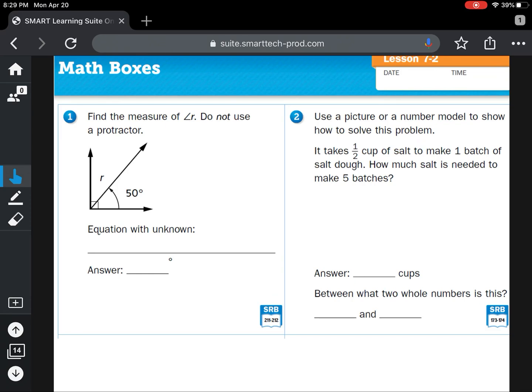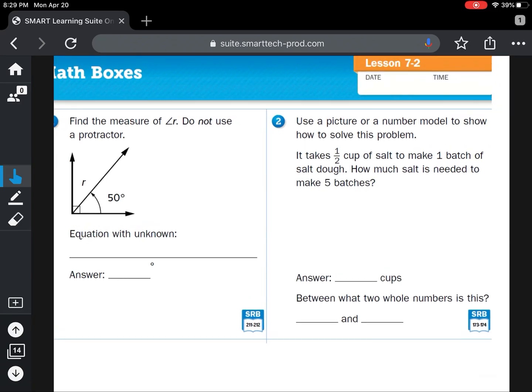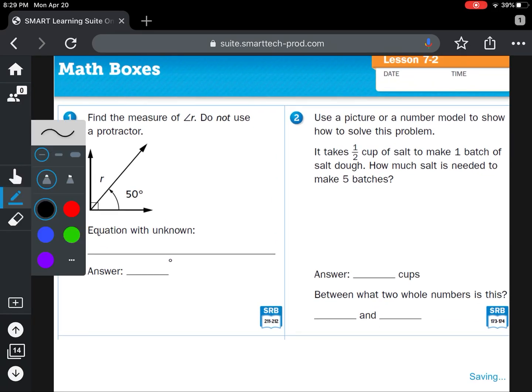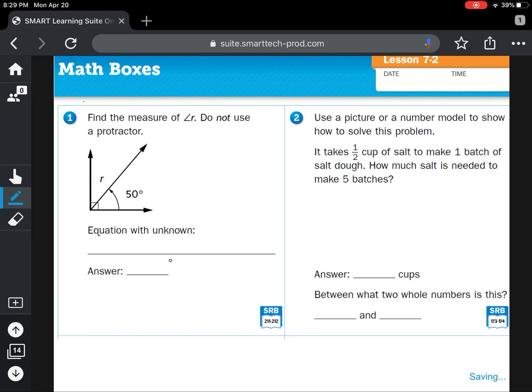For today's math boxes, you need to answer number one. So circle number one on today's math boxes seven two. On this one, you need to write an equation with an unknown and then give your answer for that missing angle.